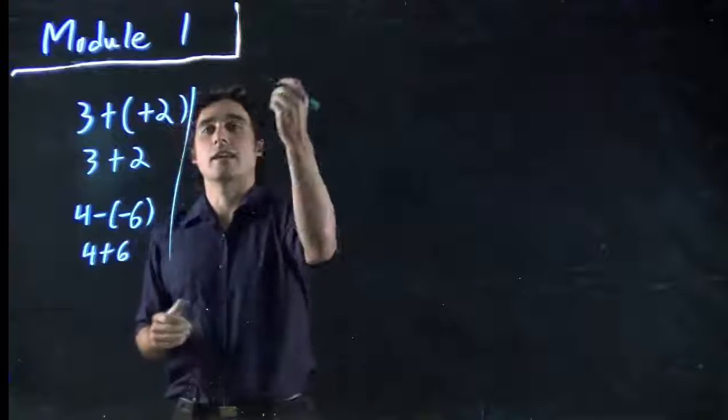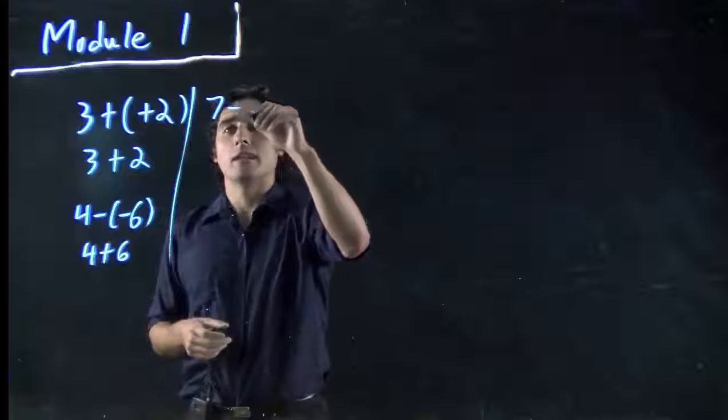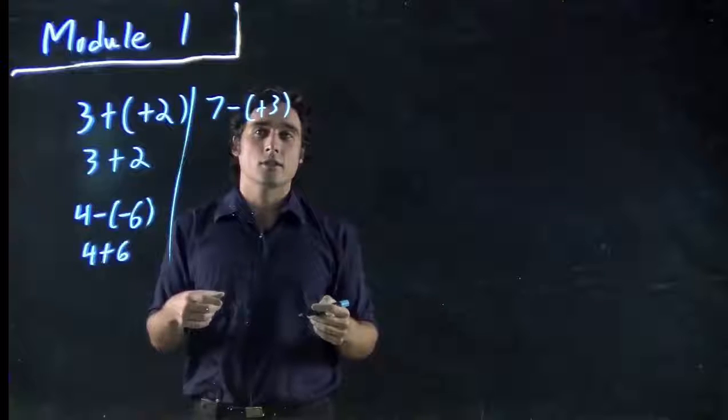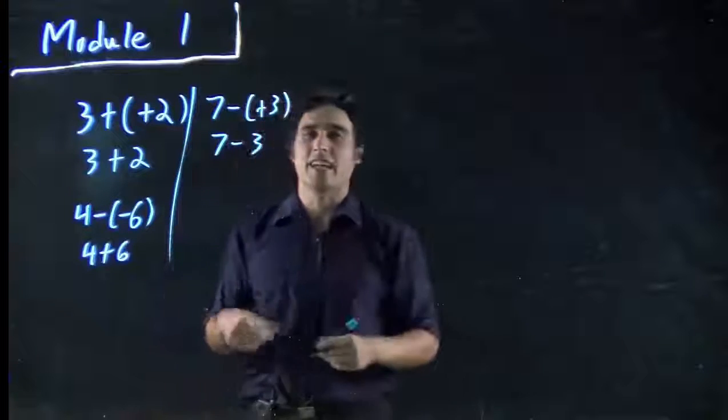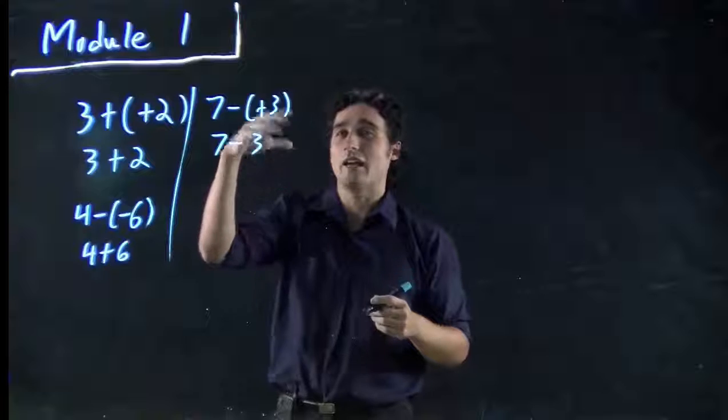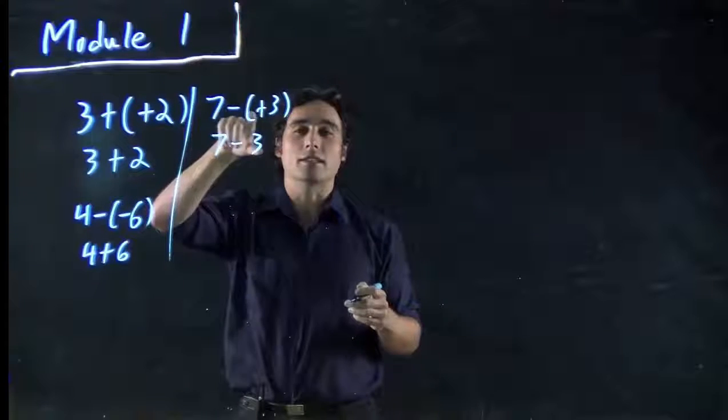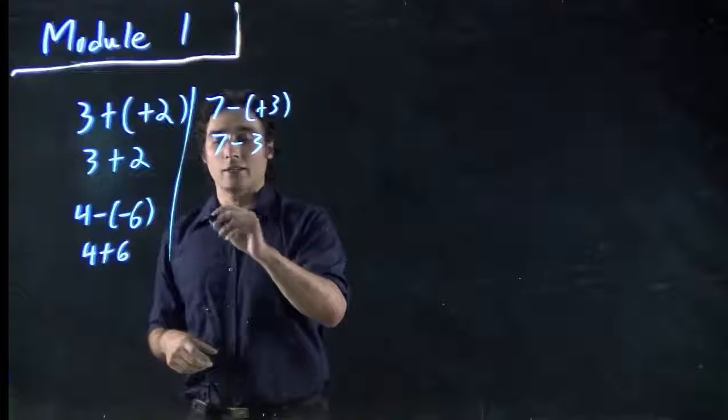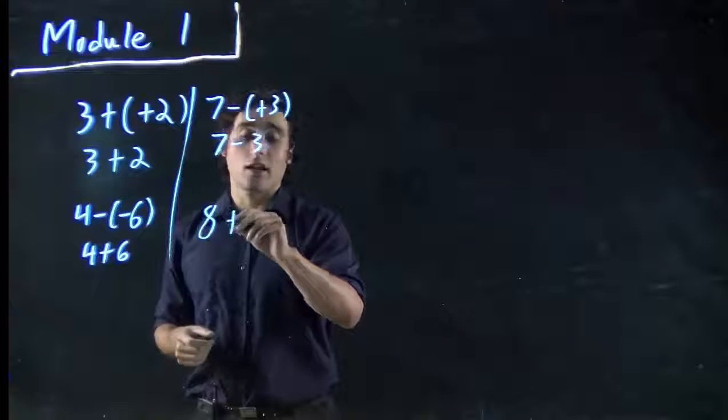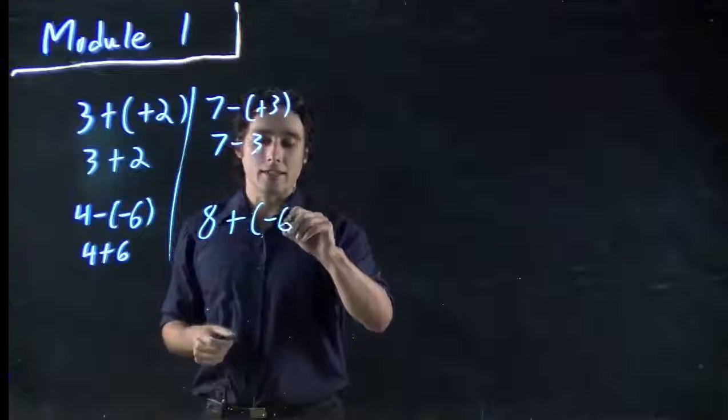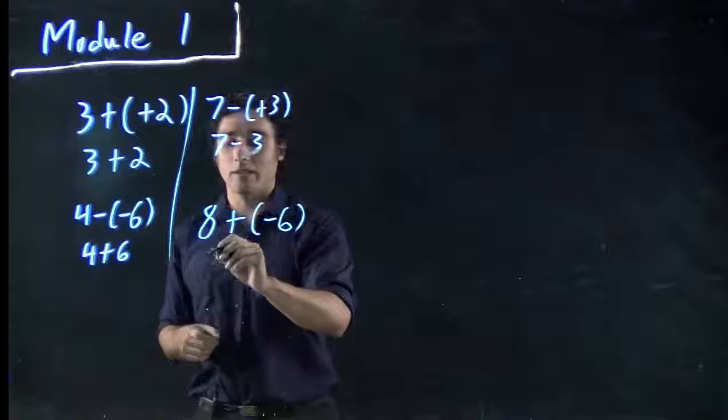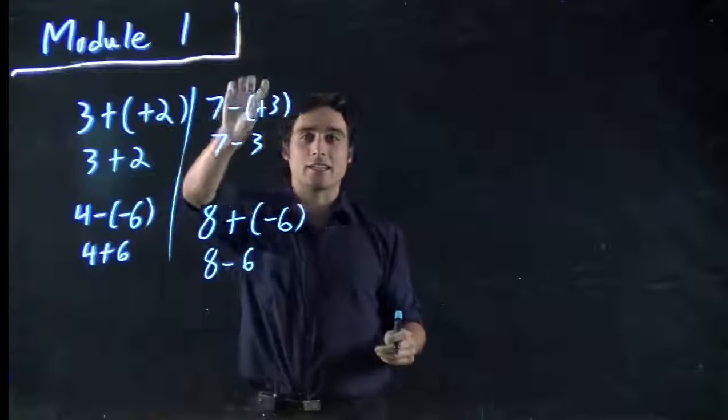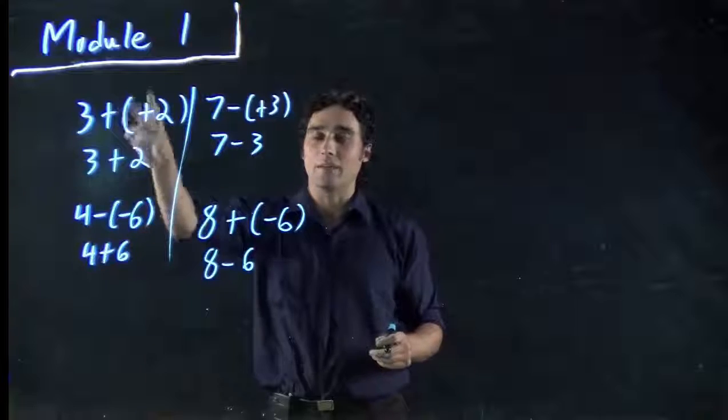But what if I add 4 minus a negative 6? The negative and the negative cancel to make a positive. So we get 4 plus 6. Great. The basic idea here is the same signs make a positive. Two negatives or two positives ends with a positive. But you could also look at the idea of, say, 7 minus plus 3, a positive 3. This is the same as 7 minus 3. Again, you wouldn't really see it written this way, but that's the way you're thinking. A minus of a positive makes a minus.